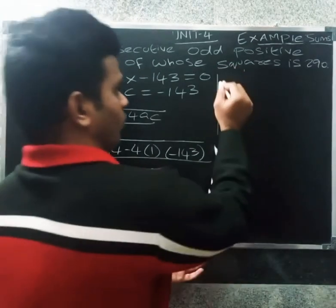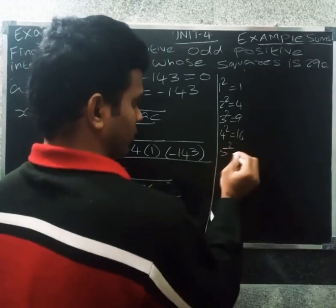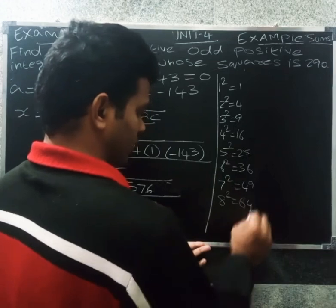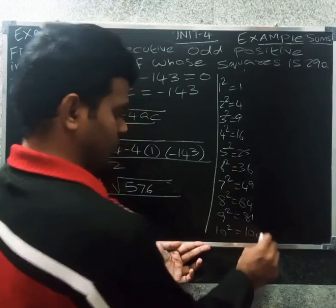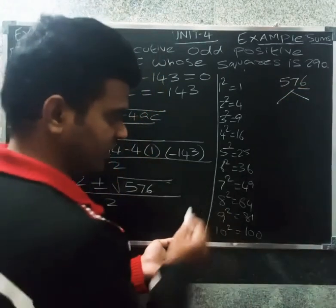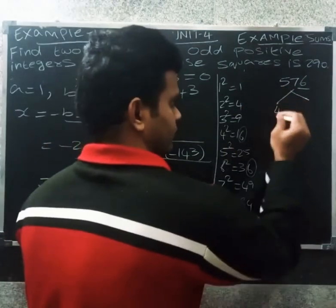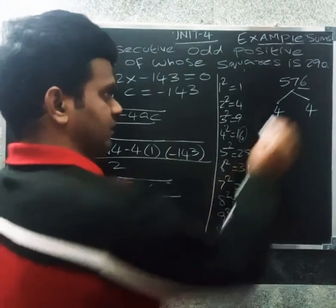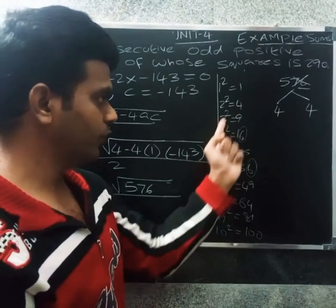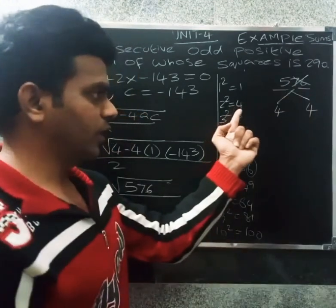To find the square root of 576: 1 square is 1, 2 square is 4, 3 square is 9, 4 square is 16, 5 square is 25, 6 square is 36, 7 square is 49, 8 square is 64, 9 square is 81. The number ends in 6, so possibilities are numbers ending in 4 or 6.